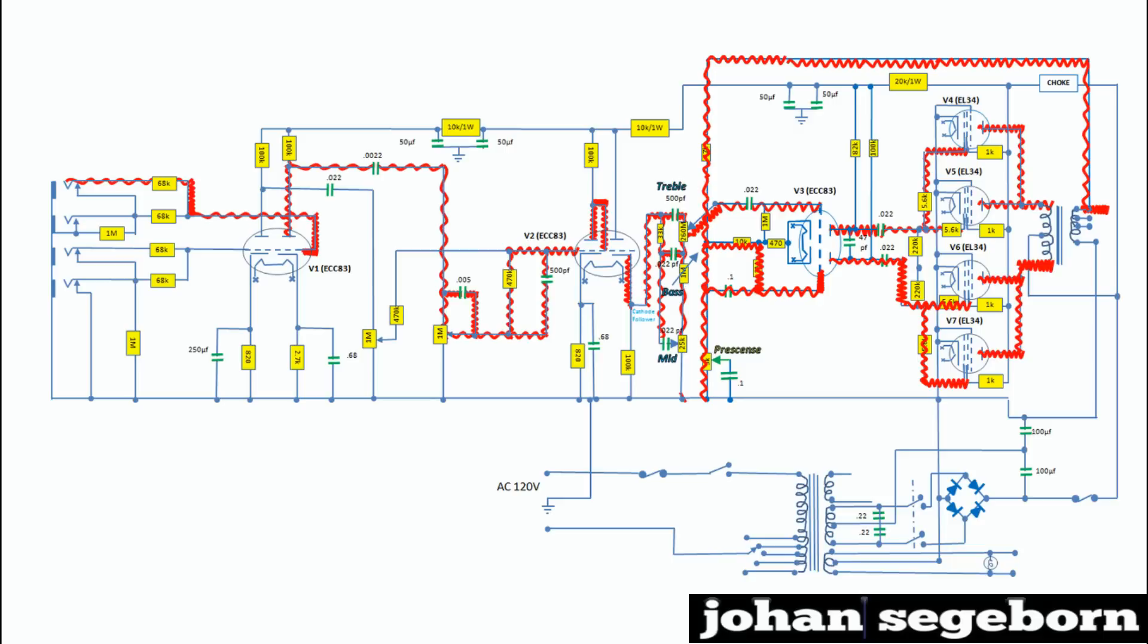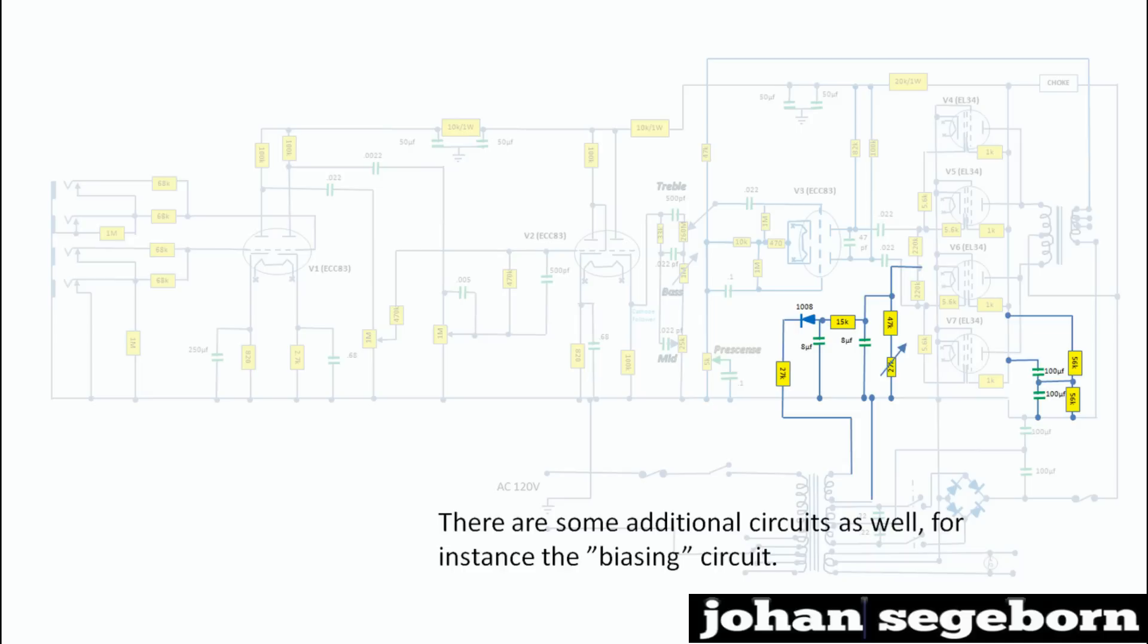There are some additional circuits as well. For instance the biasing circuit. I'd be glad to address biasing in detail in a separate clip. If you'd like, just tell me. Basically biasing makes sure that the tube operates within its linear area, as I briefly discussed before, to avoid cutoff as well as saturation. And this is done by controlling the voltage levels, the relative levels between the grid and the anode and cathode.